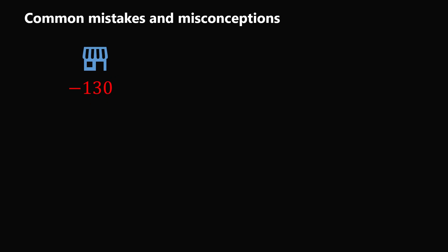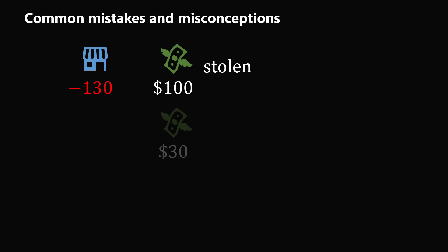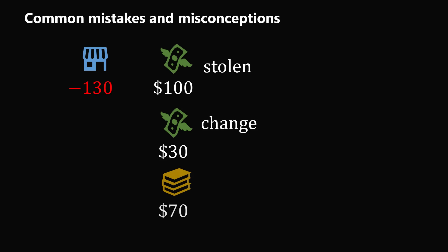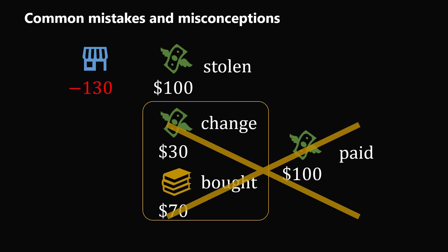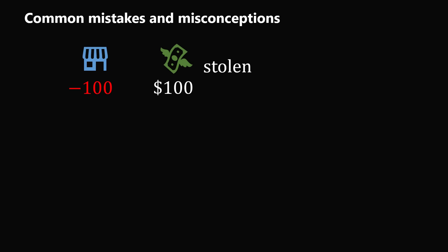Another common mistake is saying the store has lost $130. People in this camp say the person stole a $100 bill and $30 was given in change, so $130 left the store. But what's missing is that $70 of goods were also given, and this whole transaction was paid for by the $100 bill. Once you take that into account, the transaction cancels out, and in the end the store has lost $100.